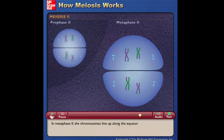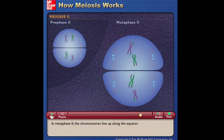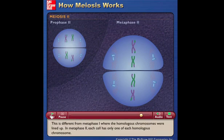In metaphase II, the chromosomes line up along the equator. This is different from metaphase I, where the homologous chromosomes were lined up. In metaphase II, each cell has only one of each homologous chromosome.